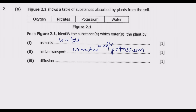Diffusion is also a very important process for plants. This is where carbon dioxide from the stomata diffuses into the leaves and into the cells. Also during transpiration, water and oxygen diffuse from the leaves into the environment. So in this case, the substance that enters through diffusion is oxygen. That gives us our three marks.